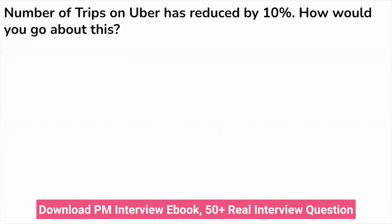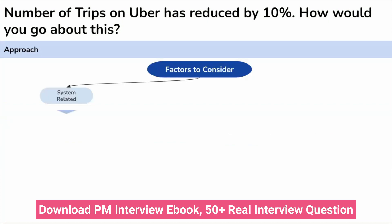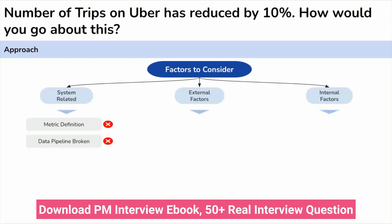Now how should we go about solving this problem? We will consider potential factors that can be held responsible for the drop. The factors can be system-related, external, or internal. System-related factors can include a change in metric definition, a broken data pipeline, incorrect event firing, or a bug introduced in the last production release. The interviewer confirmed that none of these factors caused this issue.